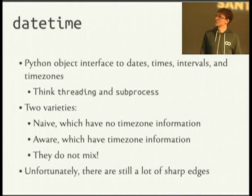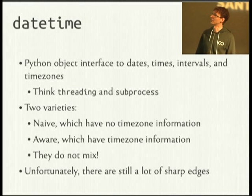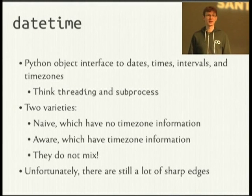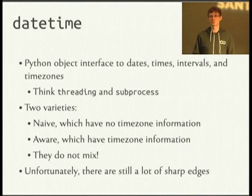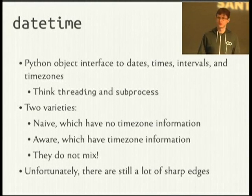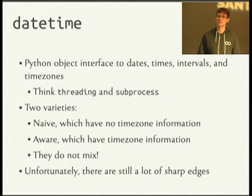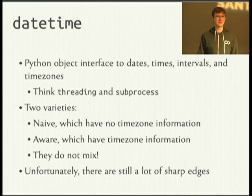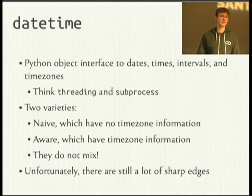The datetime module is the real workhorse for dealing with instants in Python. It's really the object interface — a nice Pythonic wrapper around these base operating system services. There are two varieties: naive ones, which don't have time zone information and in your programs should always be UTC, and aware ones, which have timezone info objects attached.